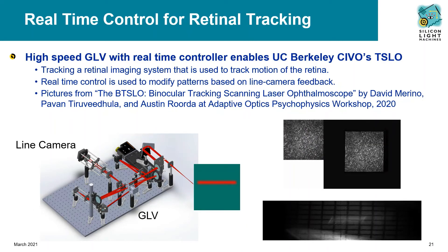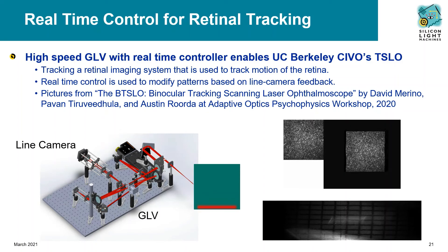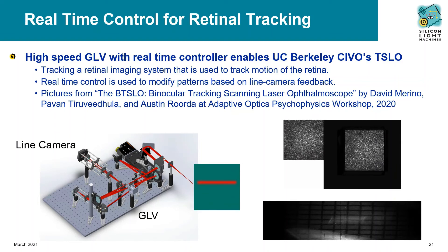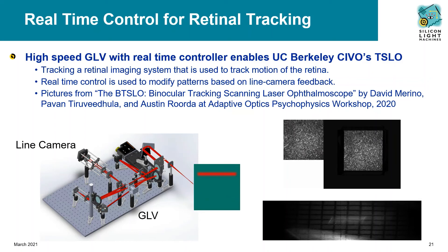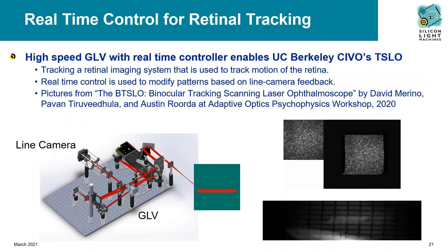Researchers at UC Berkeley Center for Innovation in Vision and Optics have also taken advantage of the high-speed and compact size of the GLV in their binocular tracking scanning laser ophthalmoscope. The GLV creates a line beam that is scanned across a retina, and the response is captured by a high-speed line camera. This application uses the new real-time controller to modify patterns based on the camera output, allowing real-time retinal tracking. This new tool will be used to investigate eye response questions that are especially relevant to the AR-VR industry.